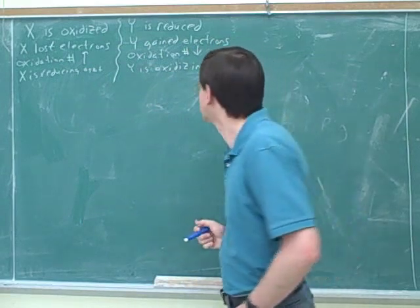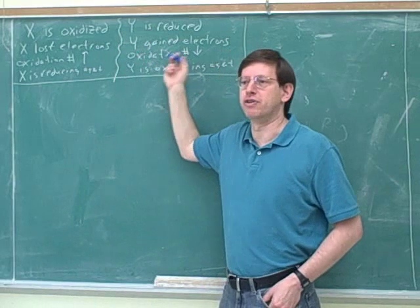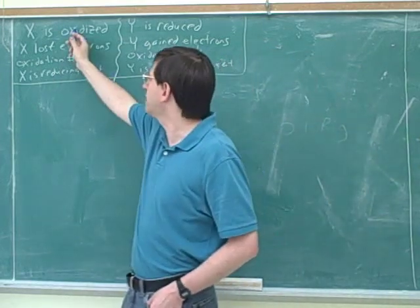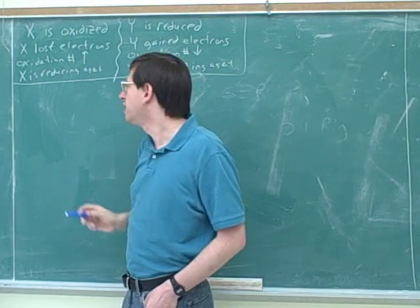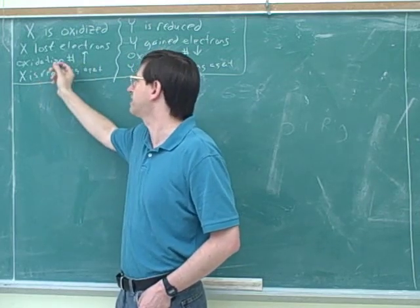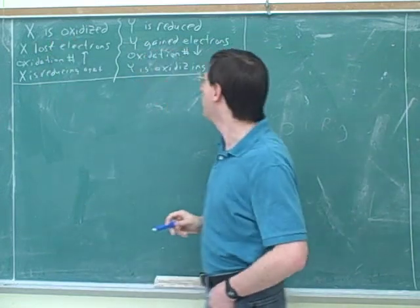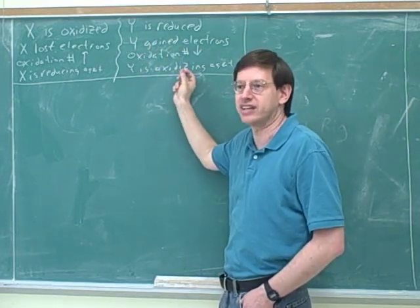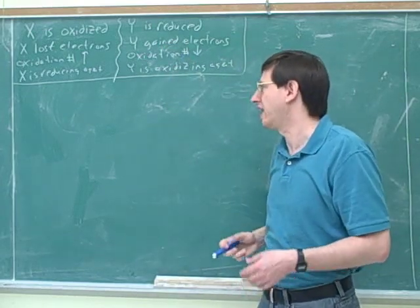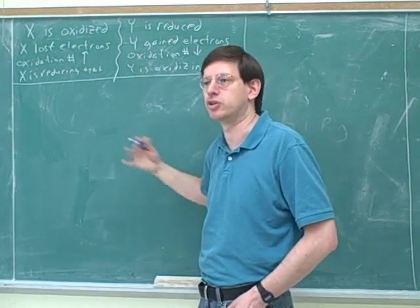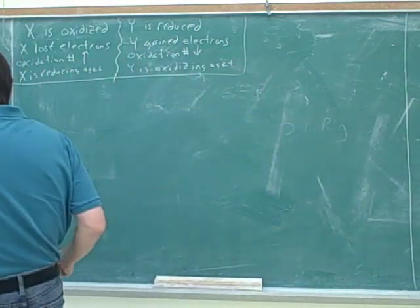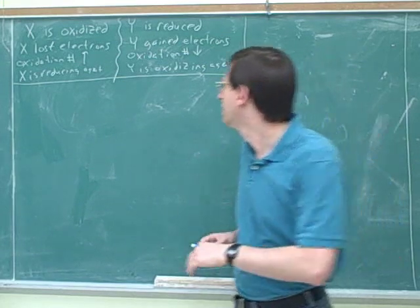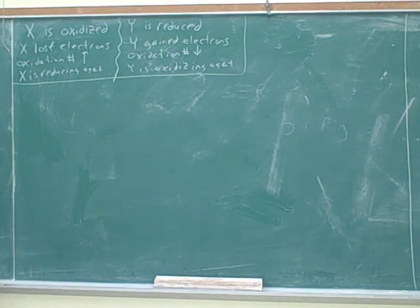This is an important table for you to try to reproduce on your own. Take a blank piece of paper and make sure you can write all of this down. This is a table of synonyms — everything in one column is a synonym for everything else in that column. For example, if X is a reducing agent, then you know its oxidation number went up, it lost electrons, and it was oxidized. Or if Y gained electrons, you know it was reduced, its oxidation number went down, and it is an oxidizing agent. All these things go together. This would make a good multiple choice question. Does your instructor give short answer or multiple choice? Half and half — so it would be worth knowing these well.